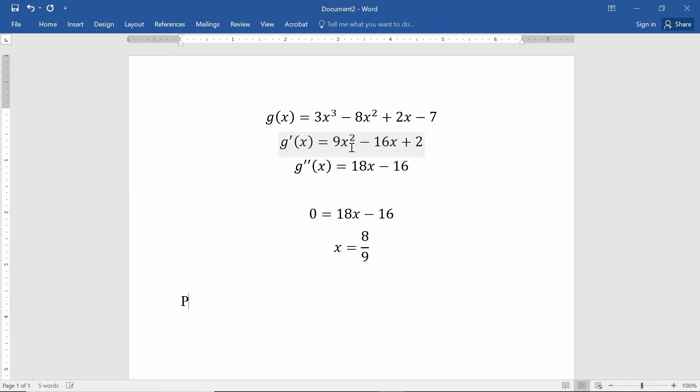Now, this is the x value of the point of inflection. So that tells me the x value of the point of inflection has to be 8 9ths. If I wanted to find the y value, I would just plug in the 8 9ths into the original function g. So plug in 8 9ths into this one.